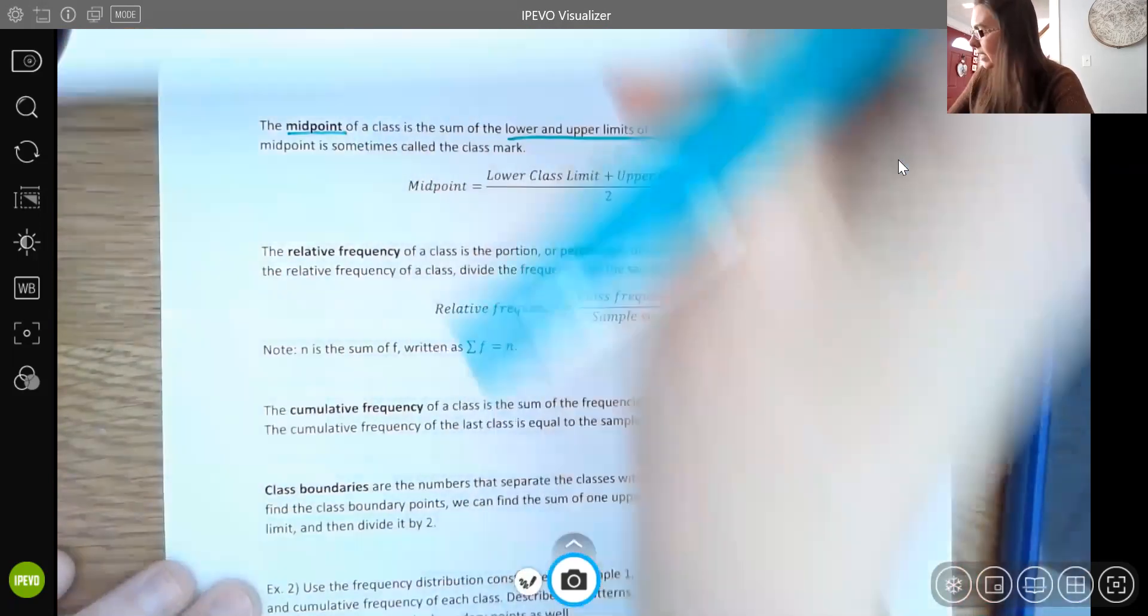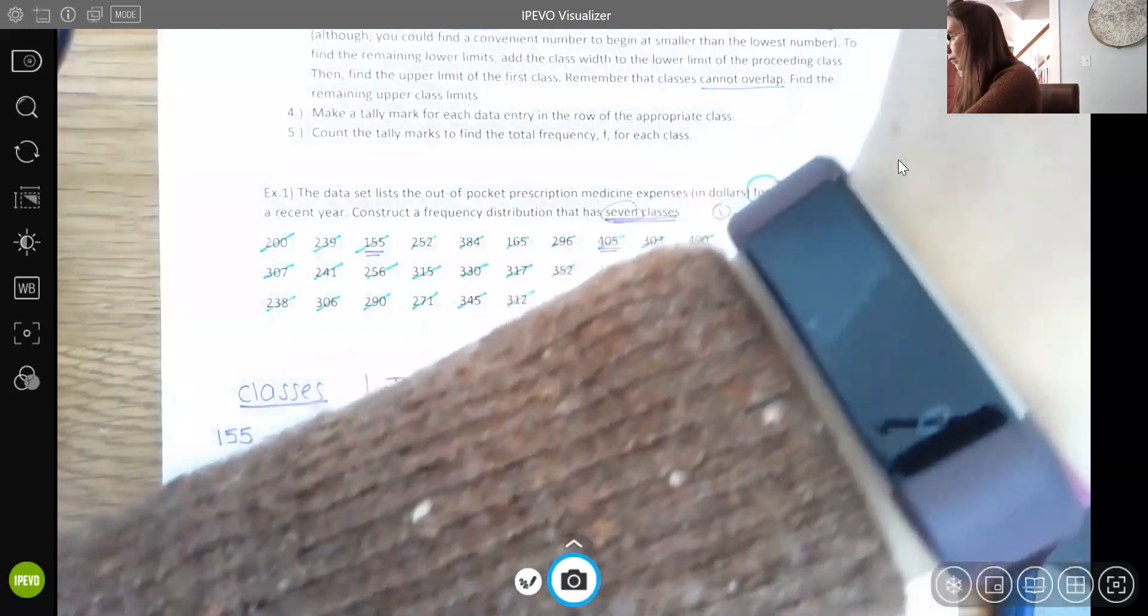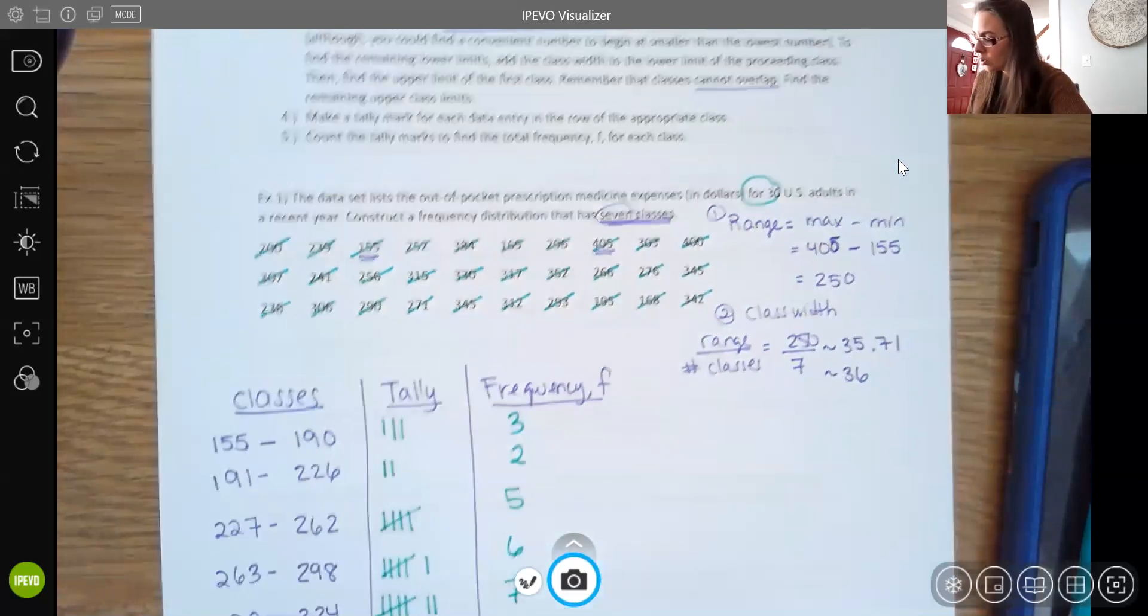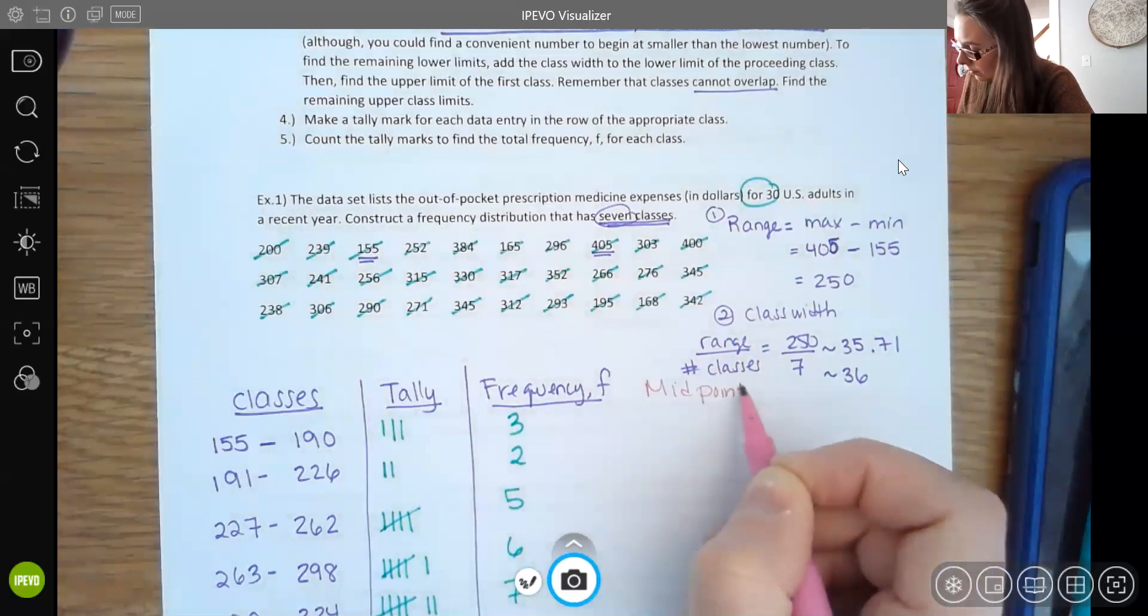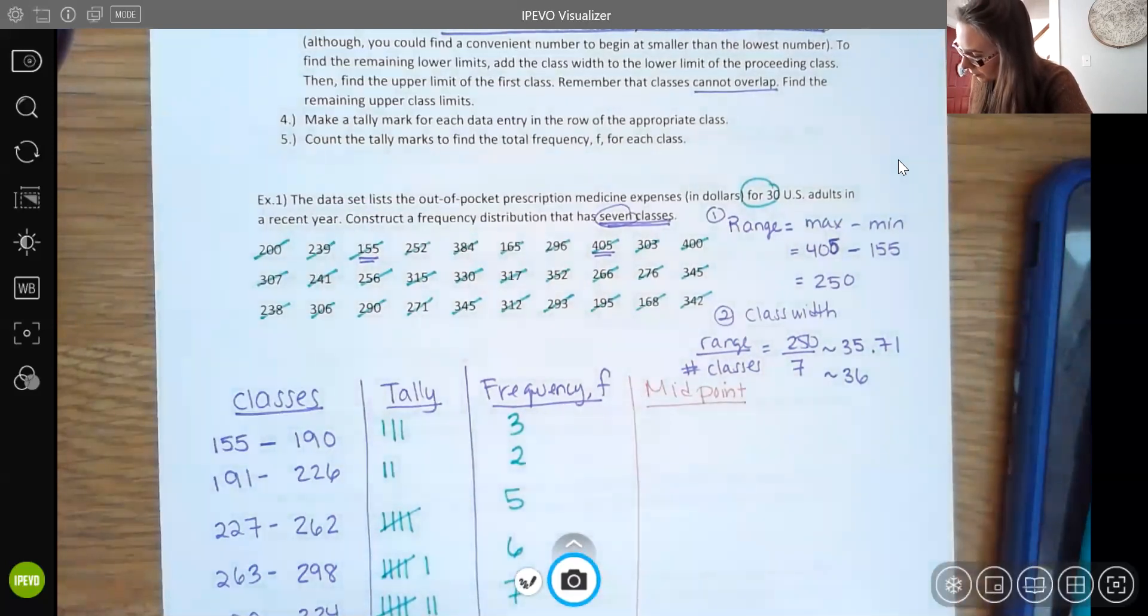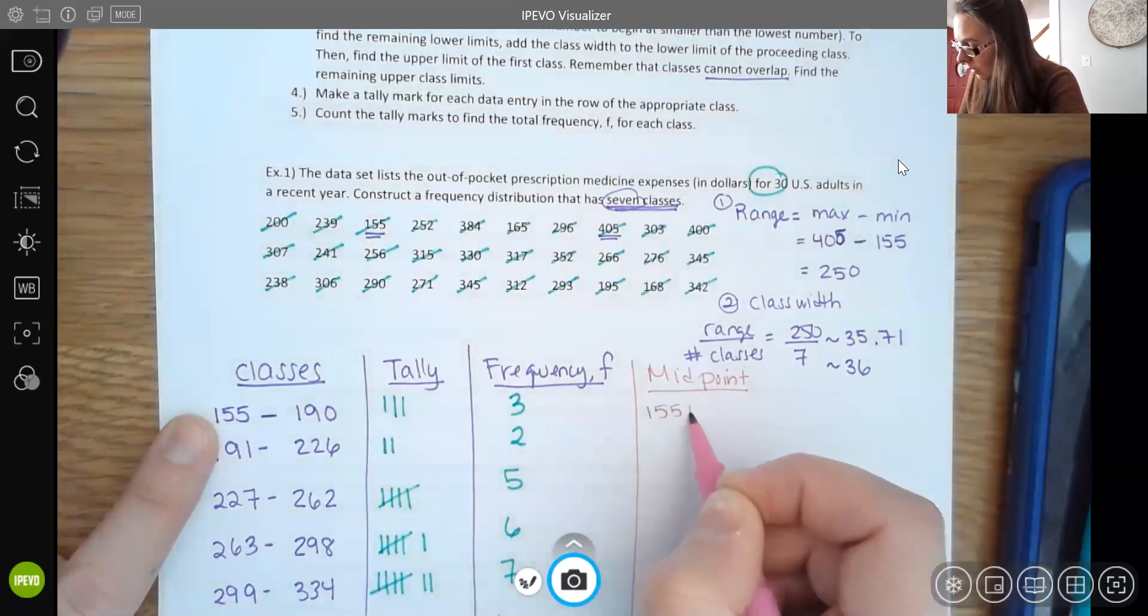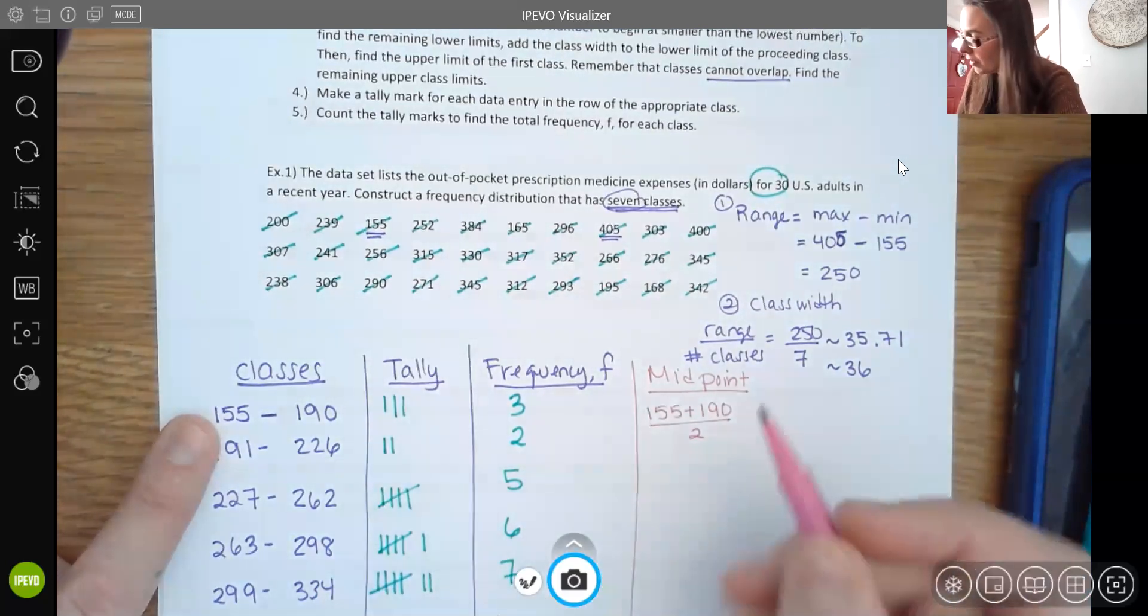Going back to our example here, what we could do is if you're trying to find the midpoint, you take that class and you take the lower value and the upper value and you divide it by two. And that gives you the midpoint, that halfway point of the class.